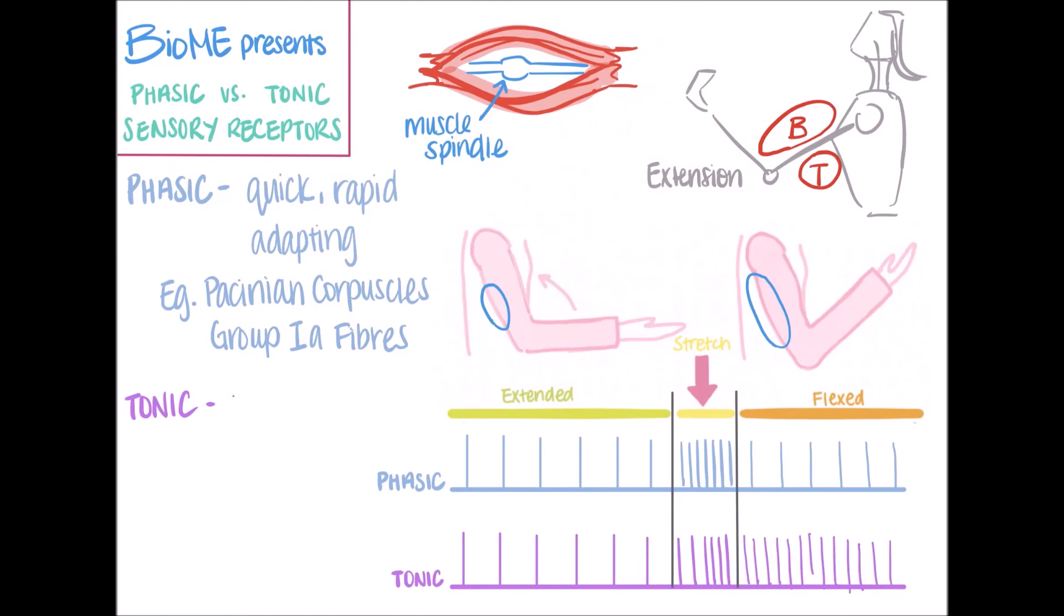Tonic receptors, on the other hand, adapt slowly, and so they are able to detect how long a stimulus is applied for. An example of this is another group of sensory receptors in muscle spindles, which are the group 2 fibers, sometimes called the flower spray fibers.